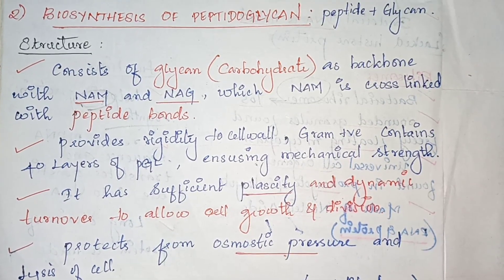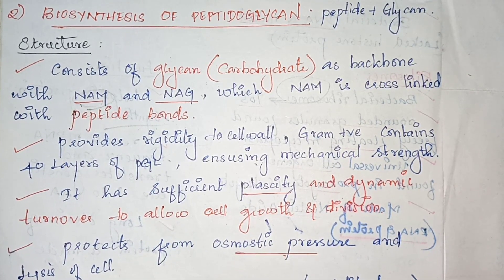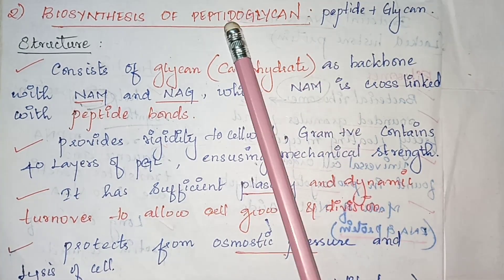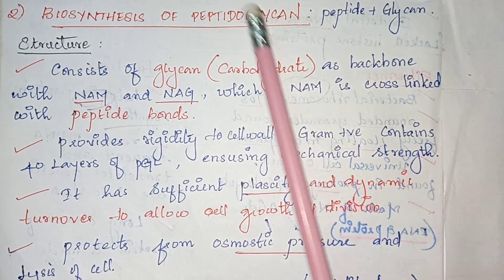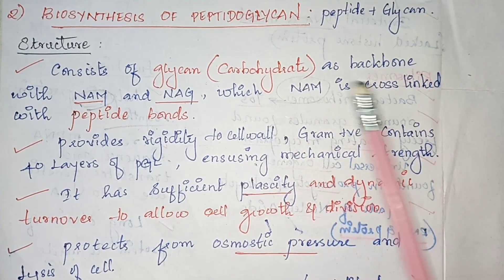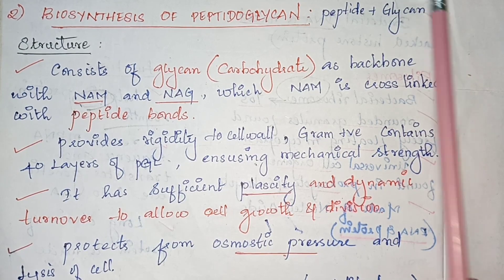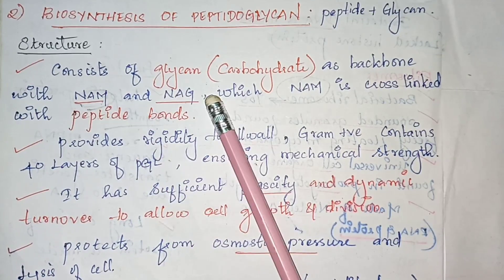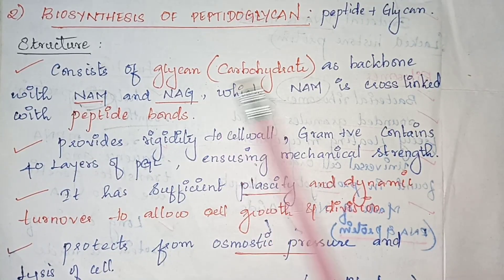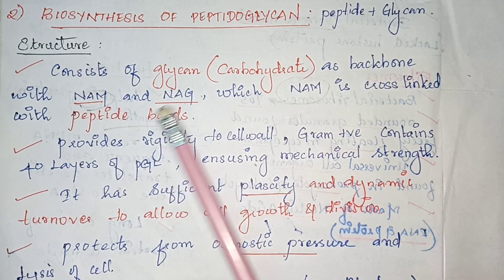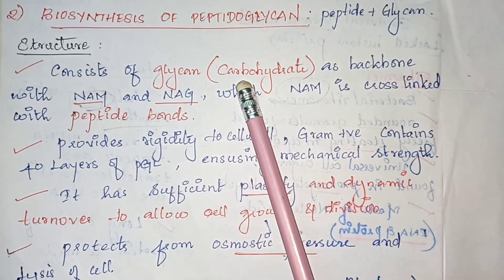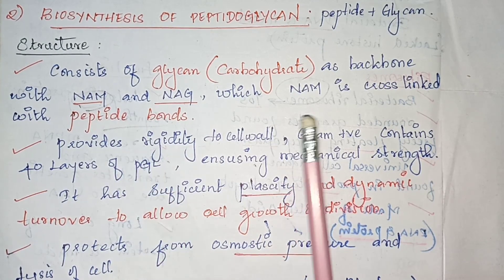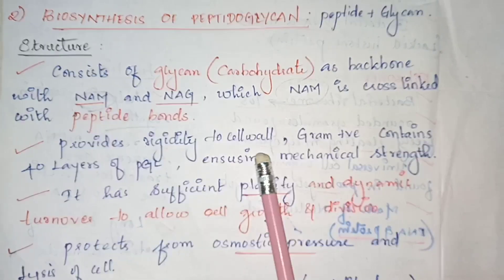Today we are going to discuss the topic: biosynthesis of peptidoglycan. By the name itself we can understand the meaning — it is a peptide and glycan chain combination. This glycan is nothing but a sugar; it is made up of two types of sugar, that is NAM and NAG, which are cross-linked with peptide bonds. The main function of peptidoglycan is to provide rigidity to the cell wall.